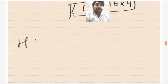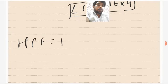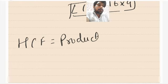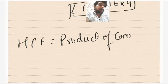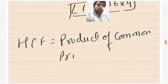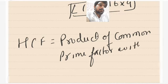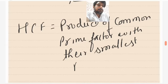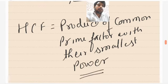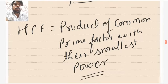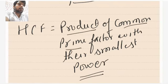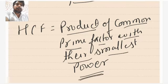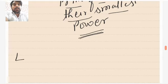So the way of finding out HCF is: it is the product of common prime factors with their smallest power. To find out LCM, it is the product of common prime factors with their highest power, multiplied by all the remaining prime factors with their respective powers.